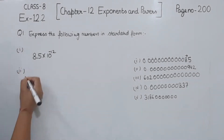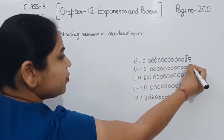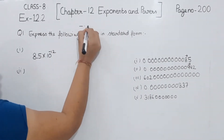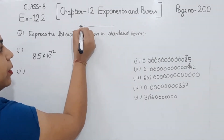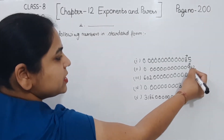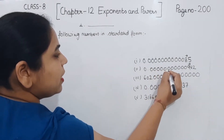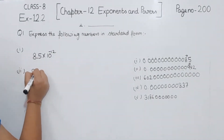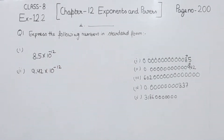Now comes the second one. This one we are having is 0.000...0942. So we have to transfer the decimal here. In standard form, only one digit should be before the decimal and after there can be numbers. So if I transfer the decimal here and count the places: 1, 2, 3, 4, 5, 6, 7, 8, 9, 10, 11, and this one is 12. So I am going to write this one as 9.42 multiplied by 10 to the power minus 12. This is the standard form for part 2.